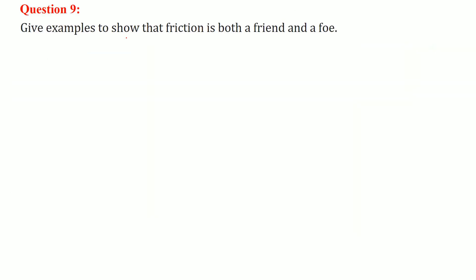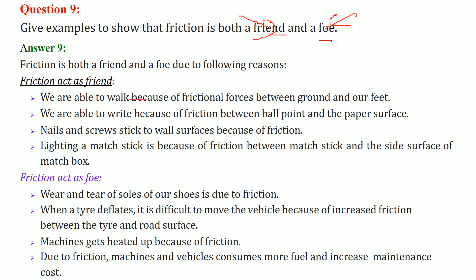Give examples to show that friction is both a friend and a foe. As a friend: we are able to walk because of friction, we are able to write because a ball-point pen uses friction with the paper surface, nails and screws stick because of friction, and lighting a matchstick is only possible because of friction. As a foe: friction causes wear and tear of machines and shoes, makes maintenance costs high, and causes machines to heat up — that is why we use oil or grease to reduce friction.